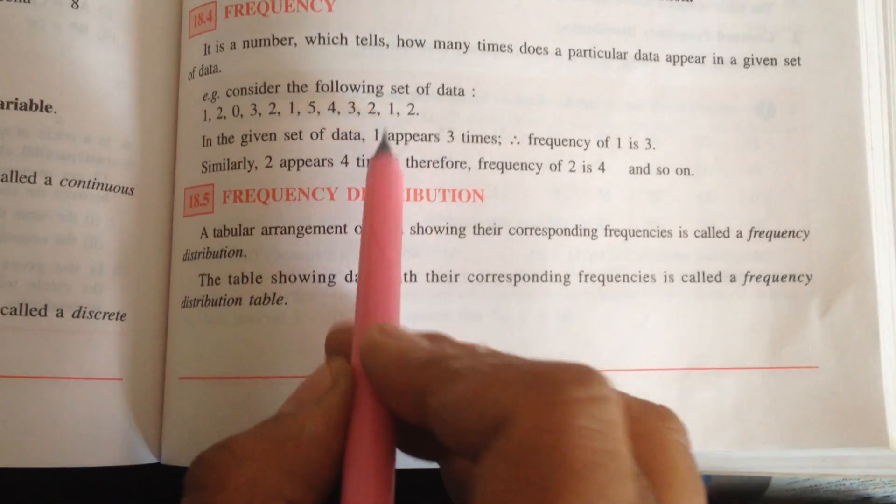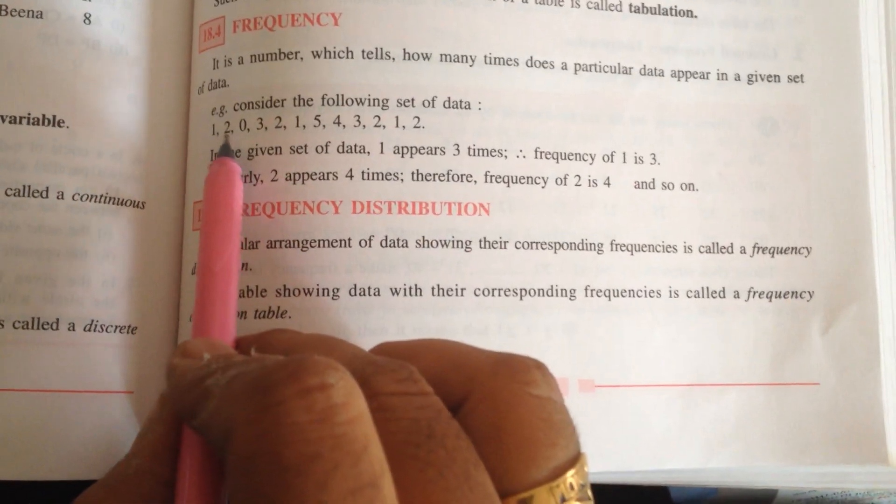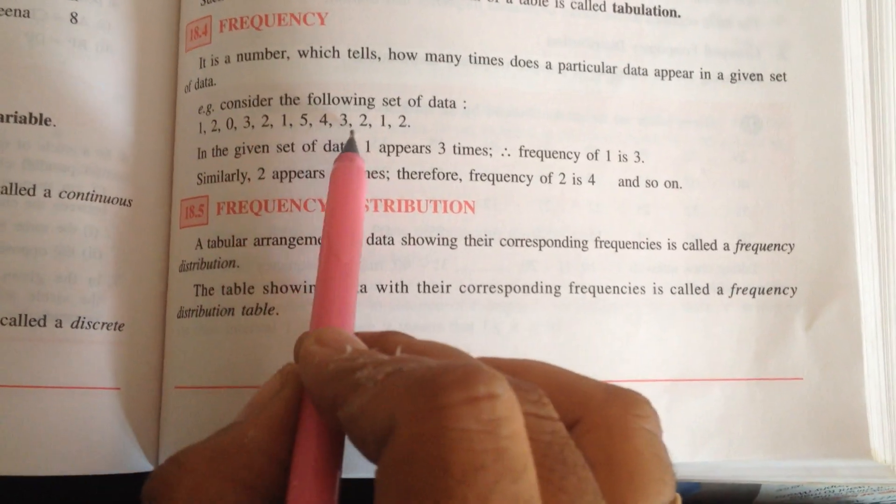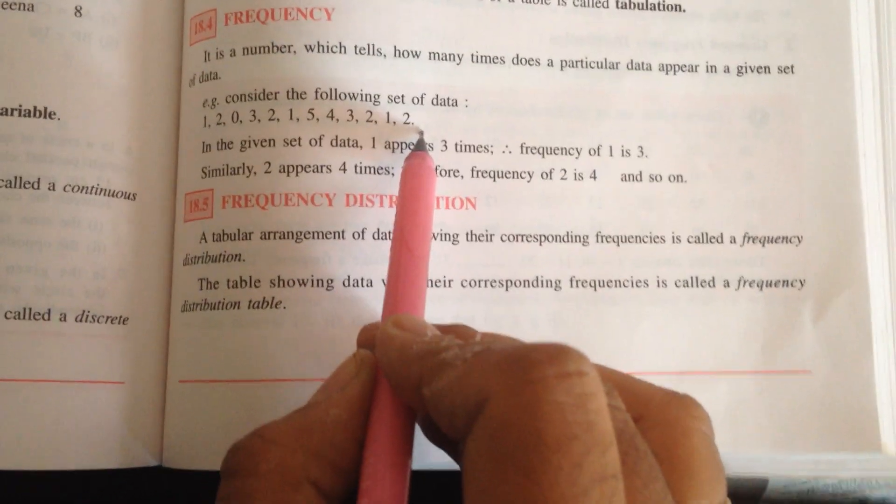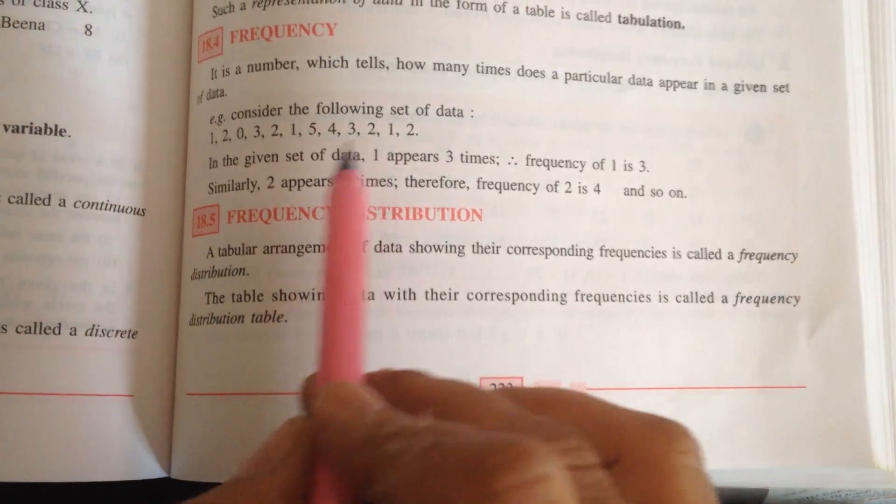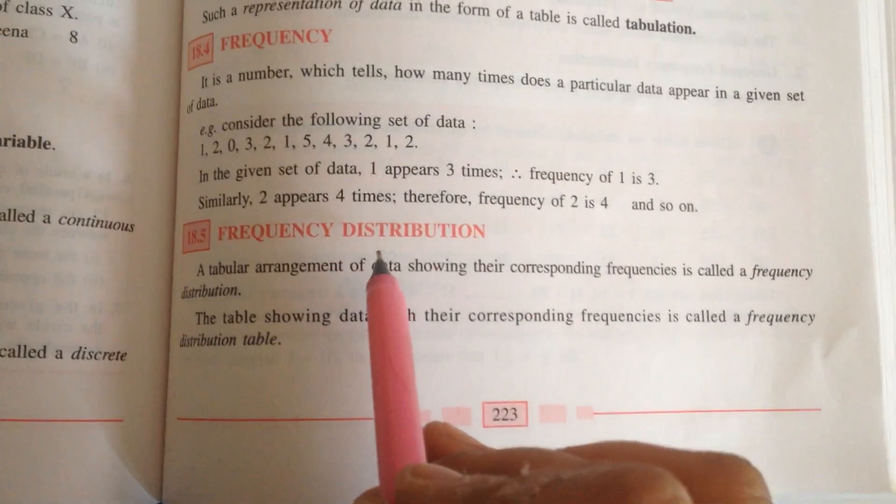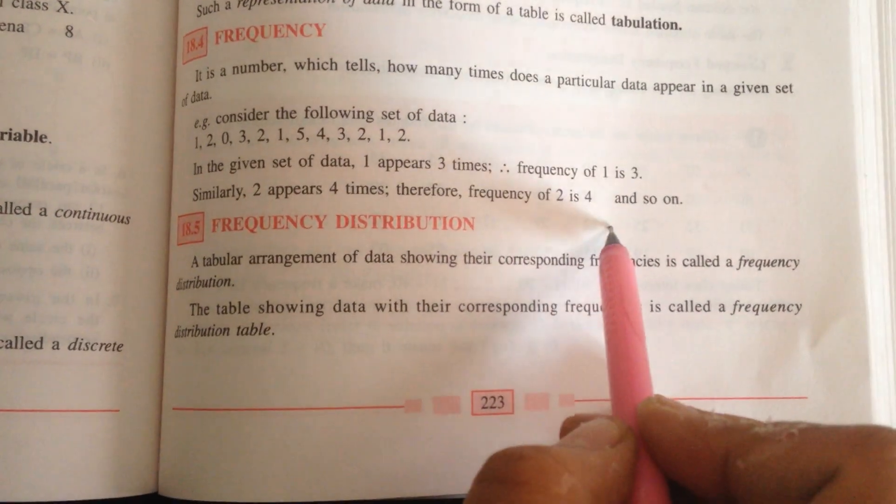1, 2, 3. 3 times come. 2 appears 1, 2, 3, 4 times. So 2 is 4 times. So 4 is what is called frequency. Frequency of 2 is 4. I think this concept is clear to you.